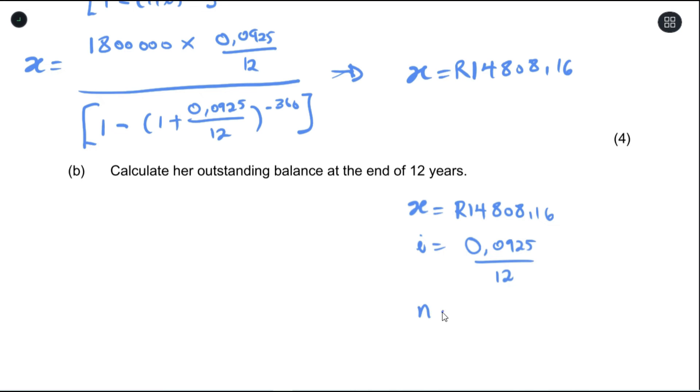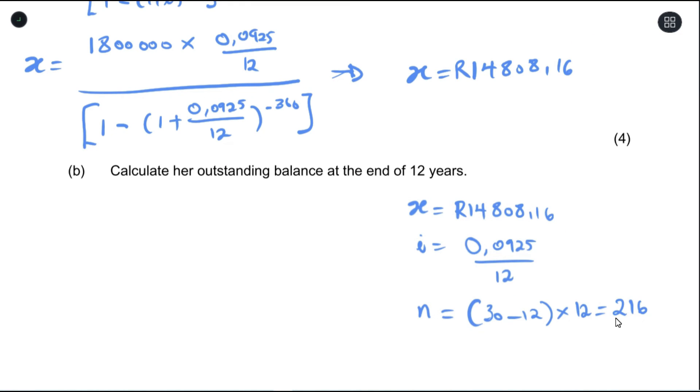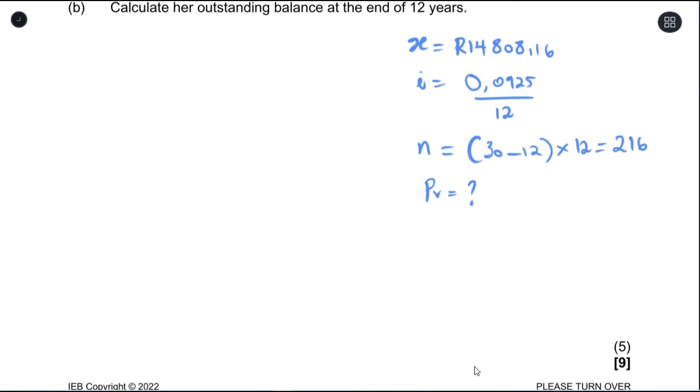The number of years is what would be different. Because you've paid 12 years, it means that you still have 30 minus 12 years left. We multiply that by 12, which would give us 18 times 12, which equals 216. So what that means is that you still have 216 payments to make, and we are trying to find the present value of what that would be.